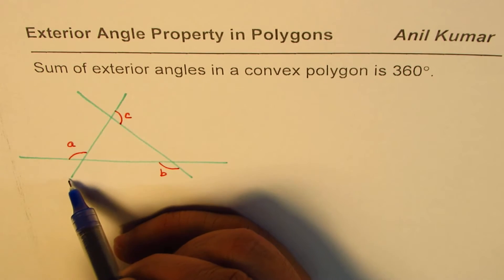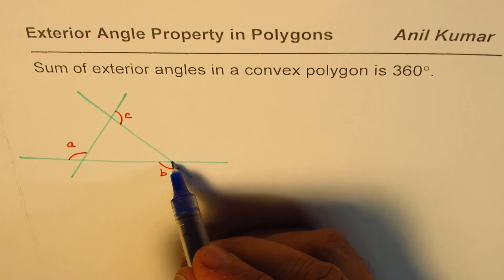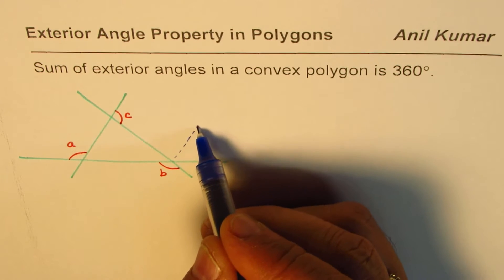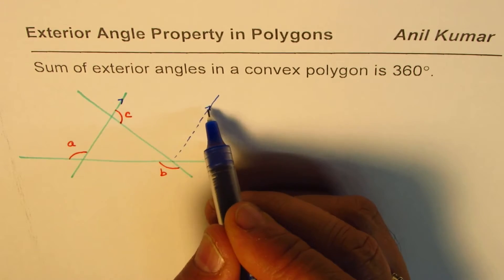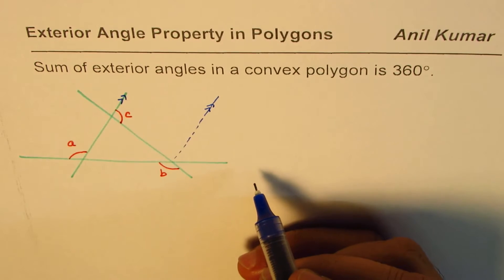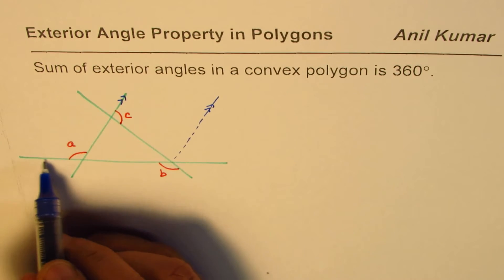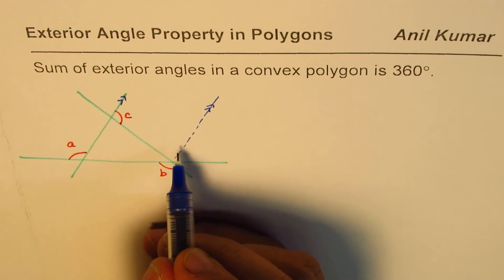Here's how we can do it. We'll translate this line parallel — I'm sketching this line here like this. This line is parallel to this one, so these two lines are parallel, making the original line a transversal.